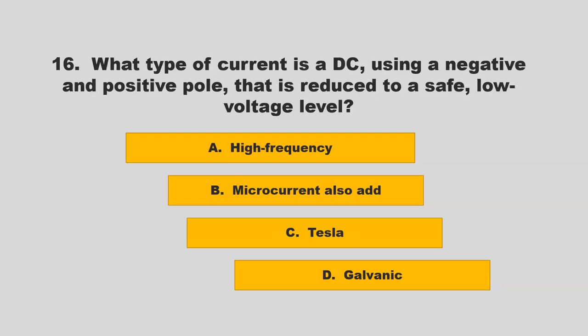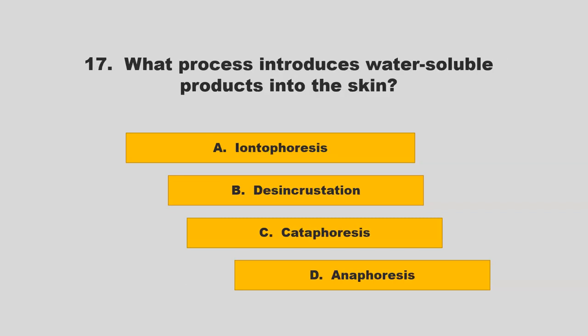What type of current is a DC? Using a negative and positive pole, this current is reduced to a safe, low voltage level. Is it high frequency, microcurrent, galvanic, or Tesla? If you chose D, galvanic, you are correct.